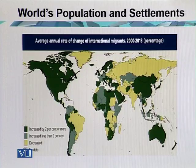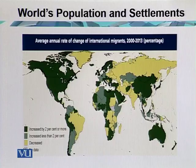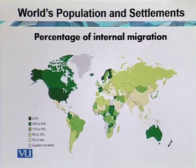Some areas have fewer international migrants because of conflicts, wars, or conditions not suitable for development — and government policy also matters in those regions. This next map shows the percentage of internal migrations, where people are moving from one state to another, from one province to another.